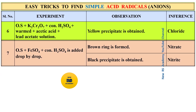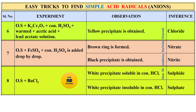The seventh test: original solution, add ferrous sulfate, add concentrated sulfuric acid drop by drop. If a brown ring forms, that is nitrate. If a black precipitate is obtained, that is nitrite. The eighth test: original solution plus barium chloride — a white precipitate soluble in concentrated hydrochloric acid indicates sulfide; a white precipitate insoluble in hydrochloric acid indicates sulfate.